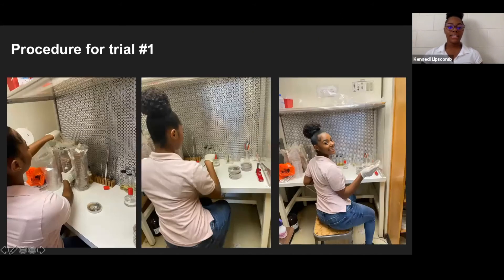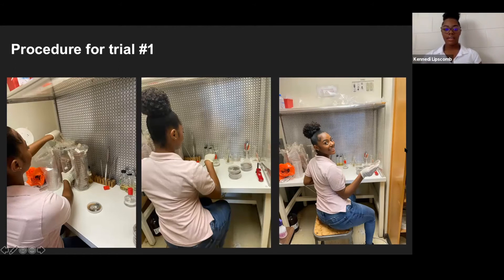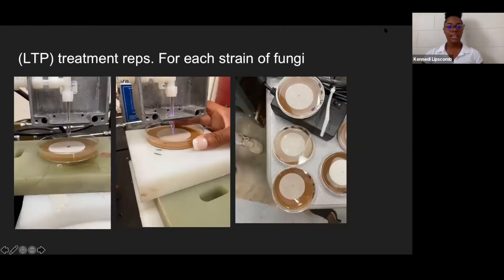This is me pouring some media and taking out the petri dishes. These are the treatments: we had a control group and then treated each strain for 30 seconds, 60 seconds, and 90 seconds. We had two groups and treated them under the plasma.